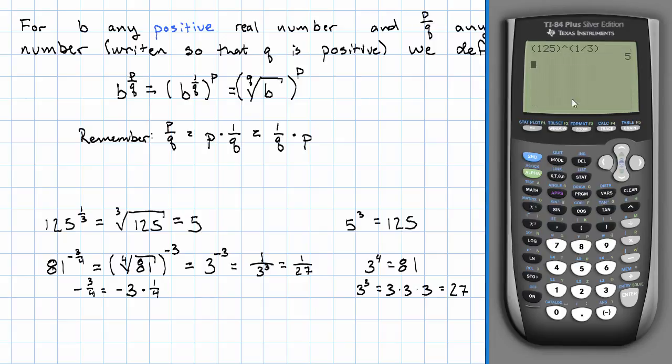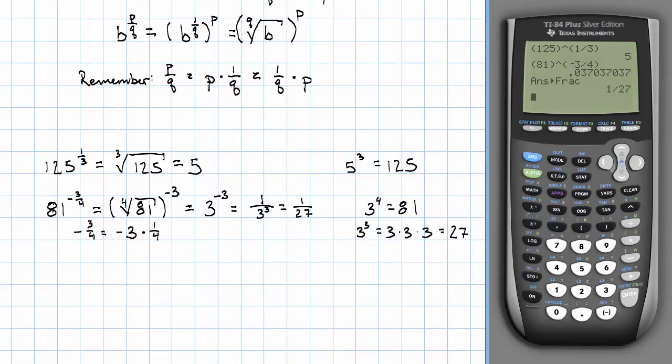And again, we can just enter that on the calculator. 81 exponent, negative 3 4ths. Make that a fraction. 1 27th, as we expected.